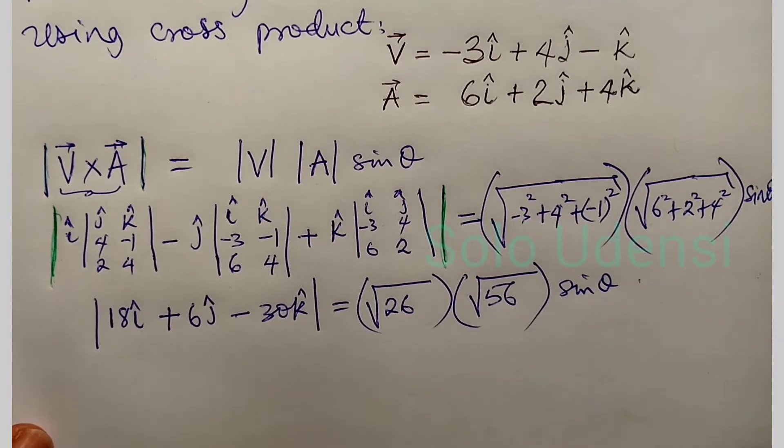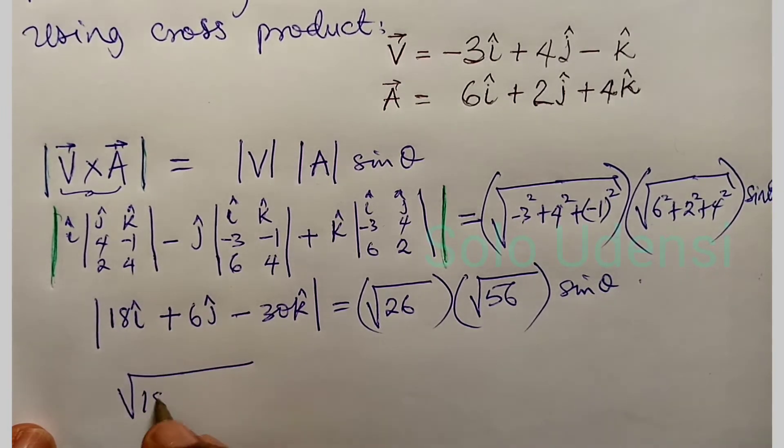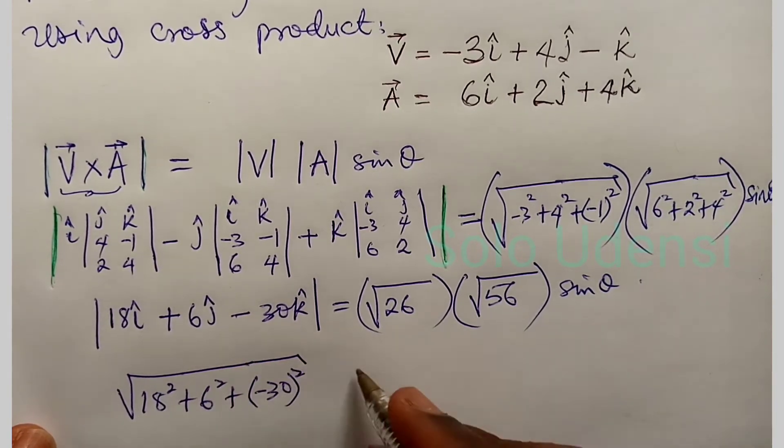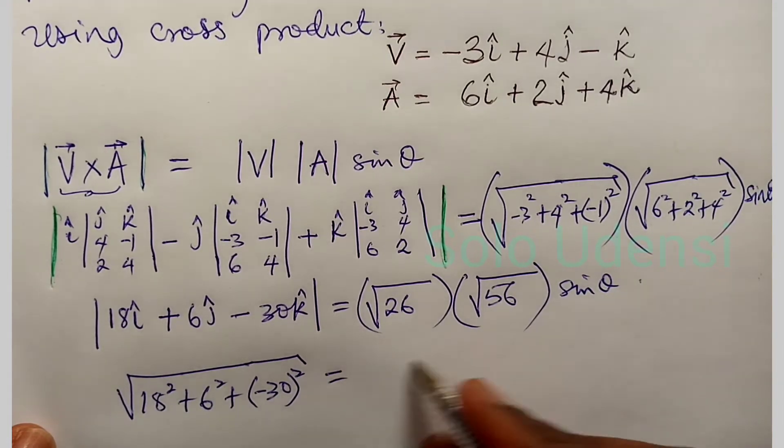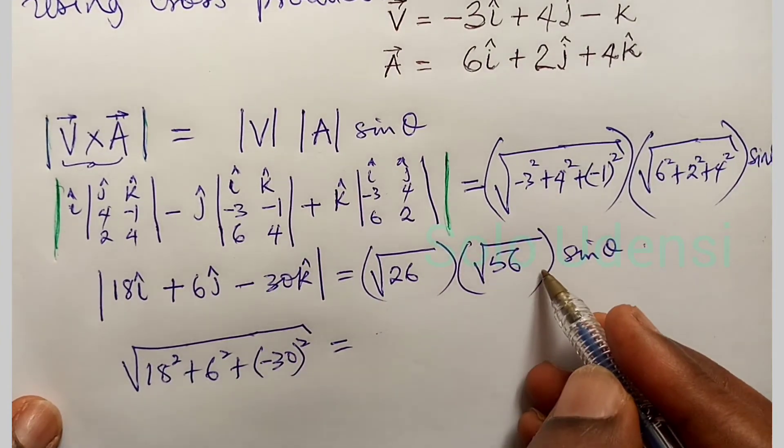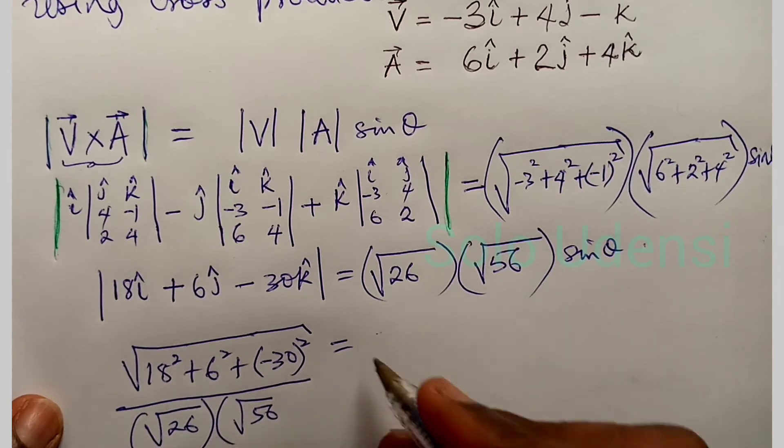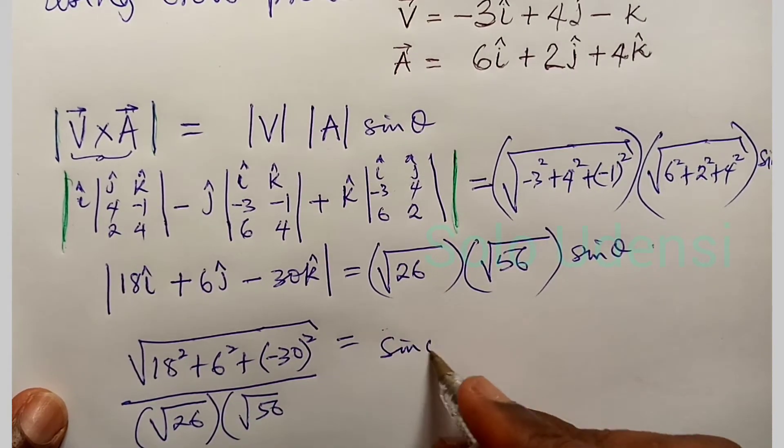So we now have that, where we find the magnitude of this vector, we have 18 squared plus 6 squared plus minus 30 squared is equal to this. So this one is, we can easily bring over this one, over square root of 26 times square root of 56 is equal to sin theta.